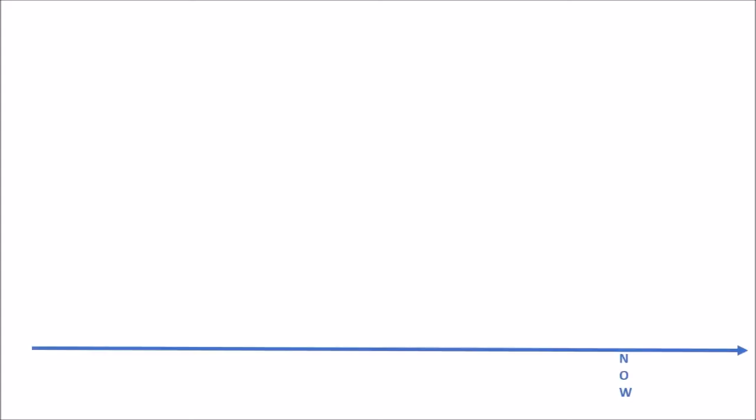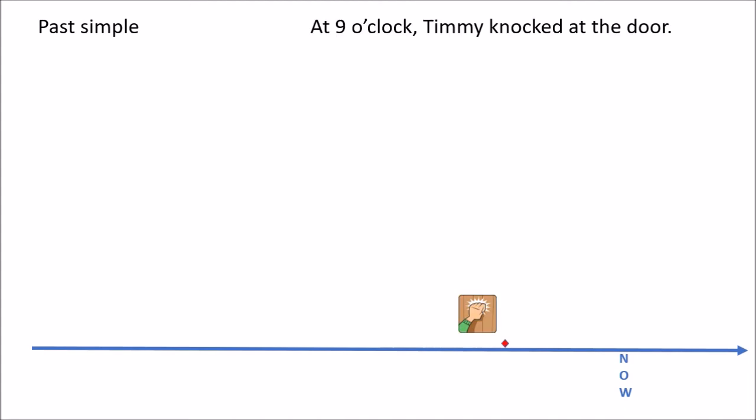Now let's see how we use the past tenses. The past tenses are sometimes called the narrative tenses — if you want to tell a story about the past, you're going to start using these. So let's tell a short story and put all the actions on this timeline here. Let's pretend that this is now, and we're going to talk about something that happened yesterday. It's a story about a boy called Timmy.